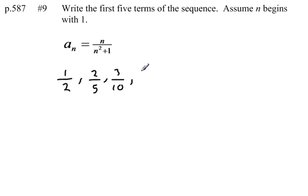The fourth term is going to be 4 over 4 squared, which is 16, plus 1, is 17.